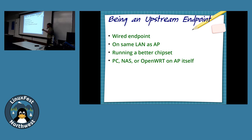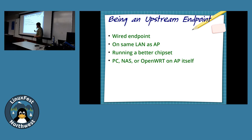We want our upstream — which is going to be sending us traffic on the same LAN as our access point — to be a good upstream. We also want to be running something hopefully faster than whatever device is downloading it. Because if our phone is better than the Raspberry Pi we're downloading from, we're actually testing the Raspberry Pi, not our phone.